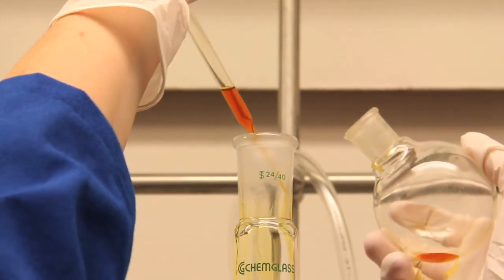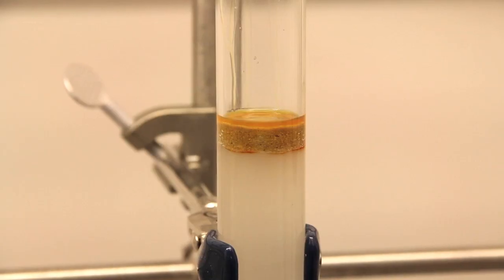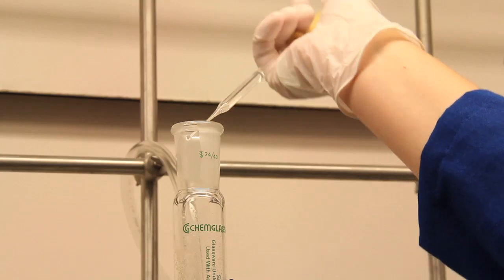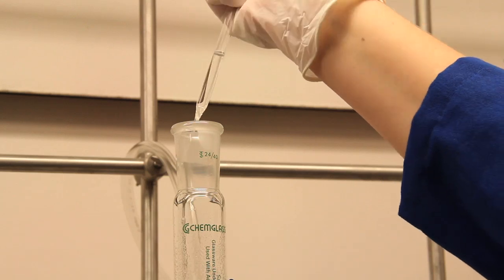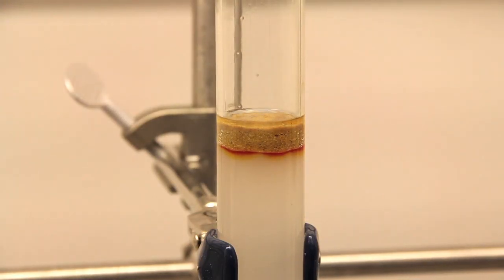I am adding the solution on the walls of the column in a circular motion. Now I open the valve and allow the solution to percolate into the silica. Now I add a little more solvent to wash the residue and I load it. This procedure is known as wet loading, but sometimes you have to use dry loading.